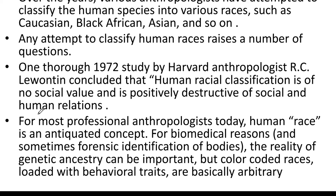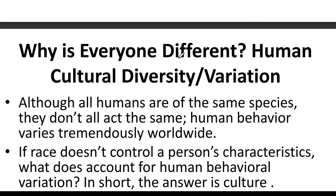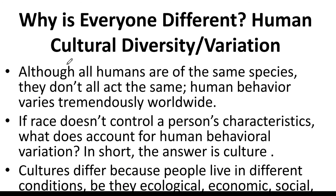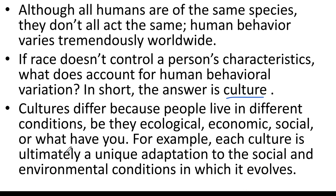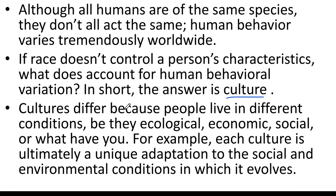Although all humans are the same species, they do not act the same way — human behavior varies tremendously worldwide. If race doesn't control a person's characteristics, what accounts for human behavioral variation? In short, the answer is culture. Culture differs because people live in different ecological, economic, and social conditions. Each culture is ultimately a unique adaptation to the social and environmental conditions in which it evolved.